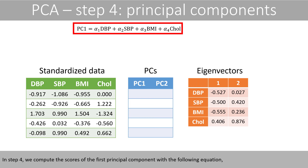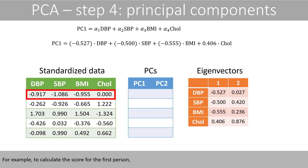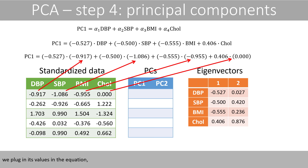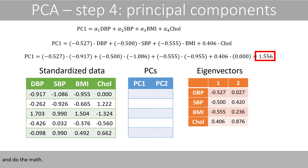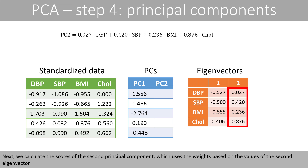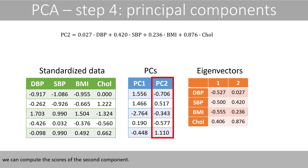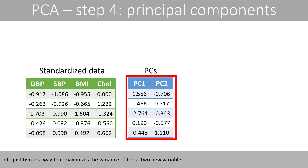In step 4, we compute the scores of the first principal component, where the weights are given by the values of the first eigenvector. For example, to calculate the score for the first person, we plug in its values in the equation and do the math. We then do the corresponding calculations for the second person, and so forth. Next, we calculate the scores of the second principal component, which uses the weights based on the values of the second eigenvector. We have therefore combined the four variables into just two in a way that maximizes the variance of these two new variables.